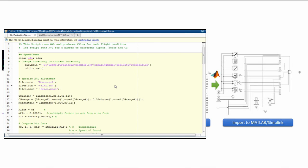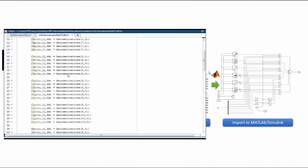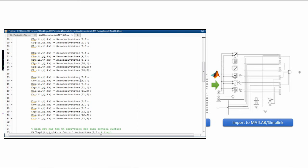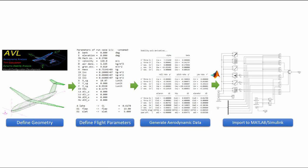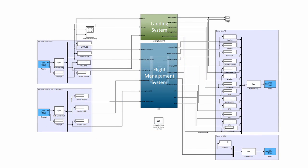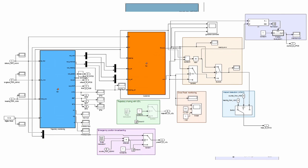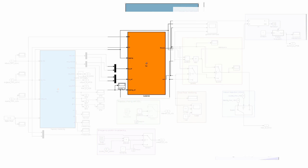We can then create another script that reads the files and imports all the aerodynamic derivatives directly into the Simulink 6DOF model by placing them into a multi-dimensional lookup table. In this way, the aerodynamics can be easily imported into the 6DOF model for almost any aircraft in just a few hours by simply modifying the aircraft geometry in AVL. The flight management system is comprised of two blocks: the first computes the closest point to the trajectory, and the second sends heading, speed, and altitude commands to the autopilot to follow the defined trajectory.